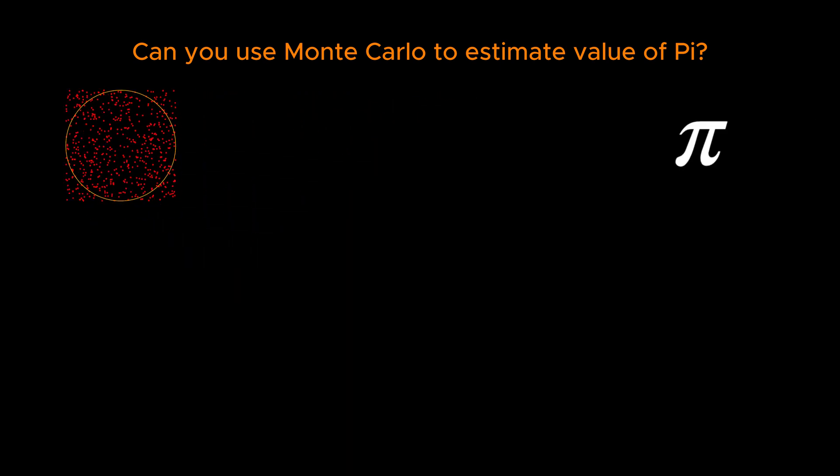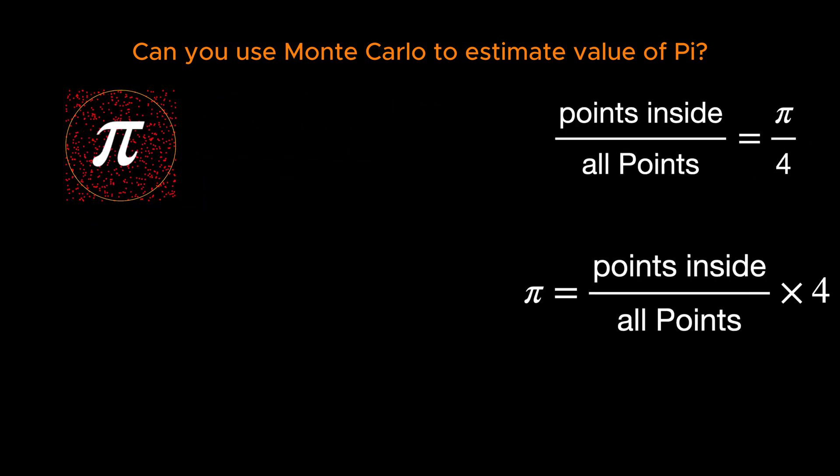We know that the area of the circle is equal to pi. Throwing random points inside the square and counting the ratio of points inside the circle over the total number of points will be equal to pi divided by the area of the square, which is 4. So, here is our estimate for the value of pi.